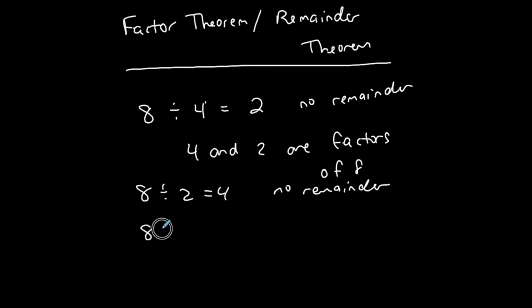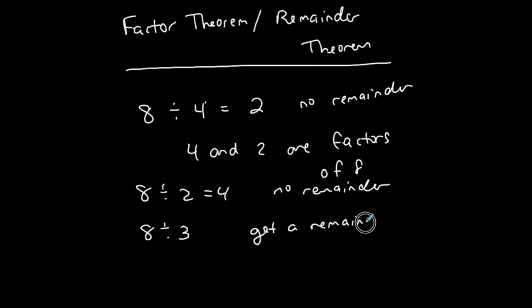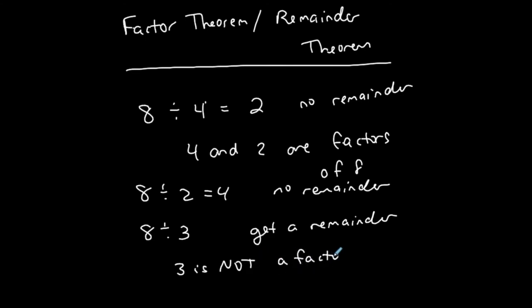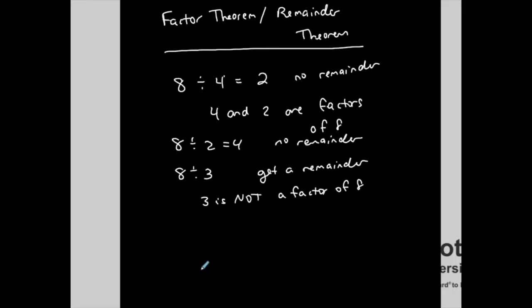If I go eight divided by three, I'm going to get a remainder, which means that three is not a factor of eight. So make it simple — go through the stuff that you learned back in the day. That's what a factor is.